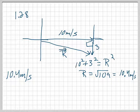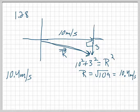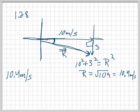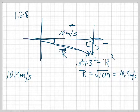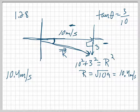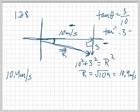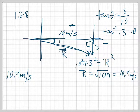How do I find the direction? Generally, directions are angles. I want to find this angle of the triangle. I know the opposite side and the adjacent side, so I can use tangent. I do tangent of the angle equals 3 over 10, so the inverse tangent of 0.3 gives me my angle. On the calculator: inverse tangent of 0.3 gives me about 17 degrees.